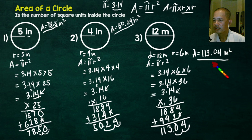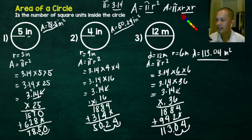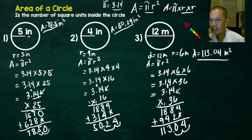That is how we find the area of a circle — by using the formula area is equal to pi r squared, or we can say that area is equal to pi times r times r. Thank you for listening. Bye-bye.